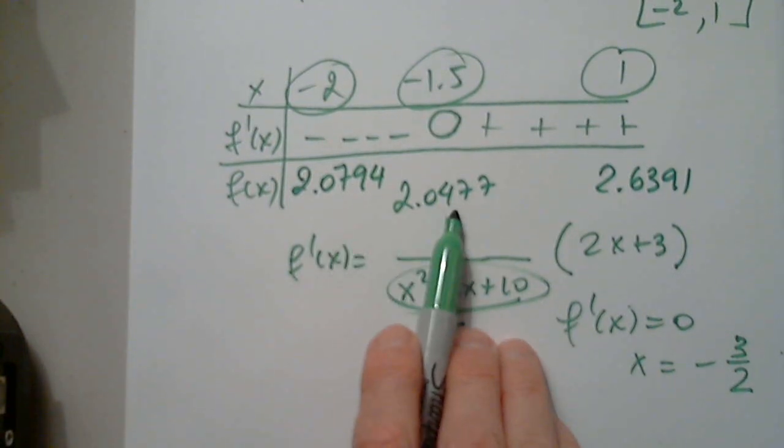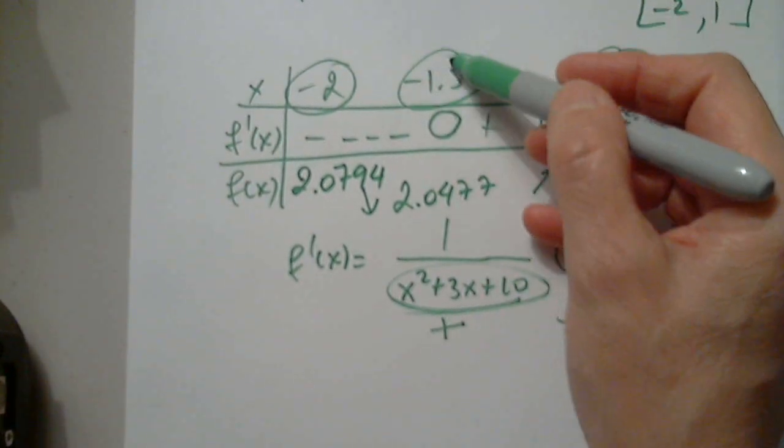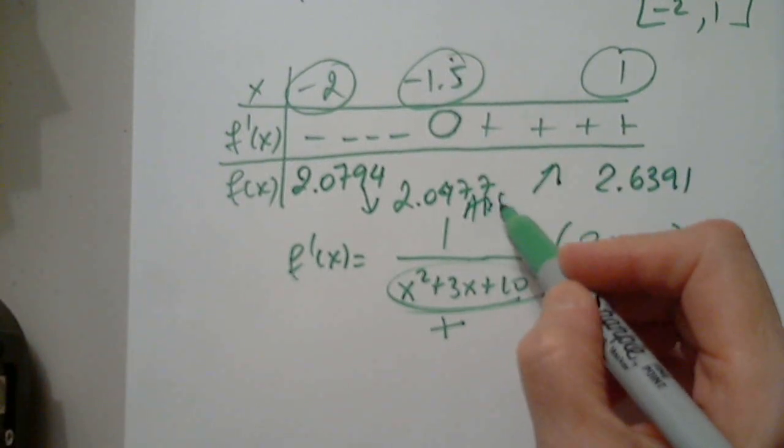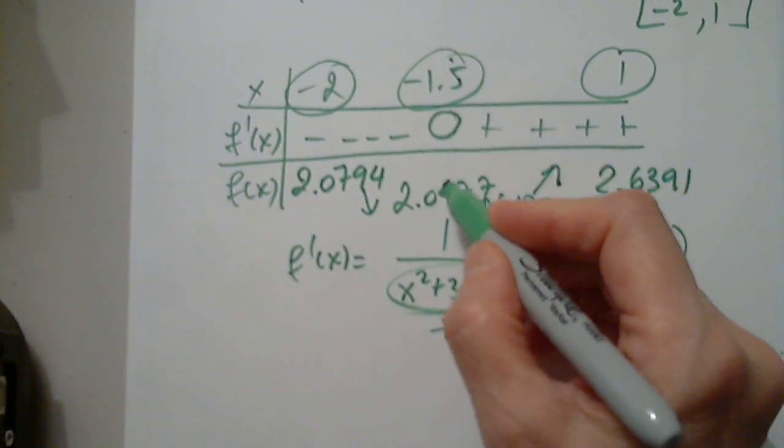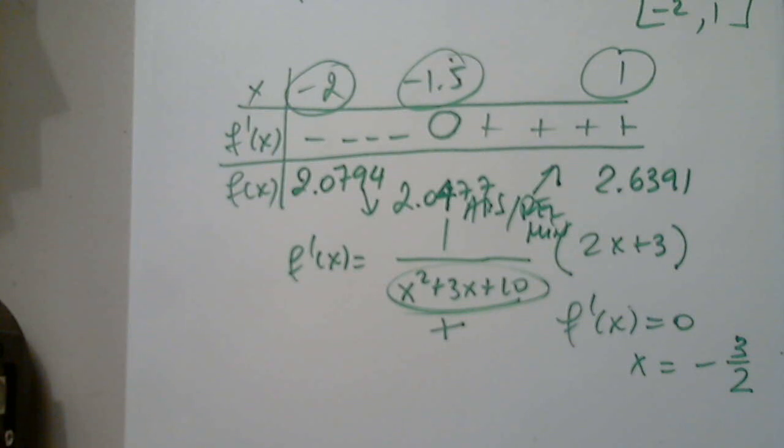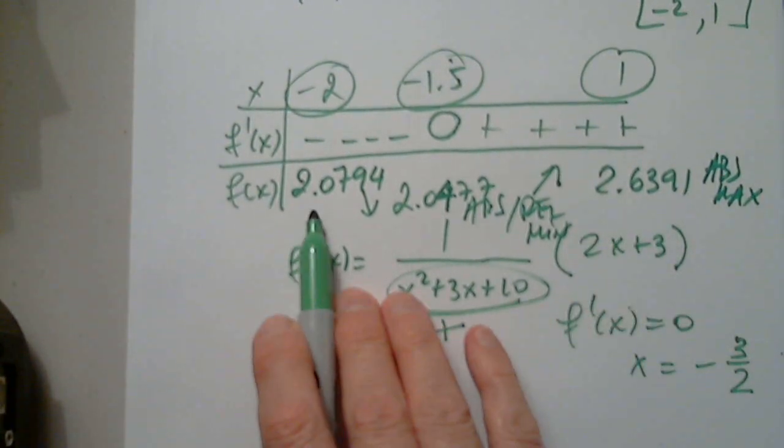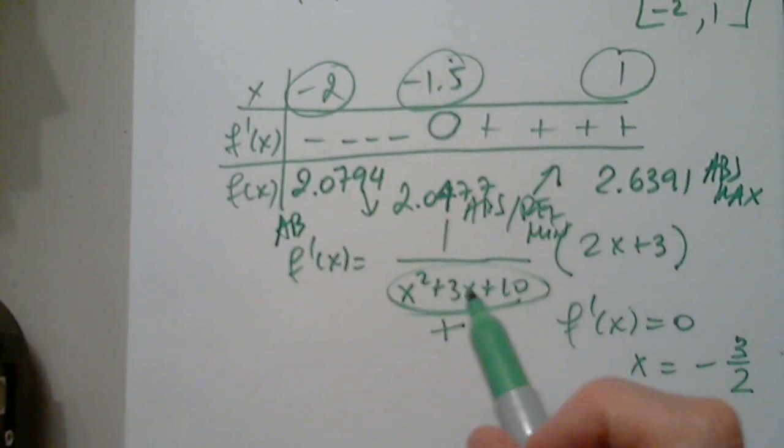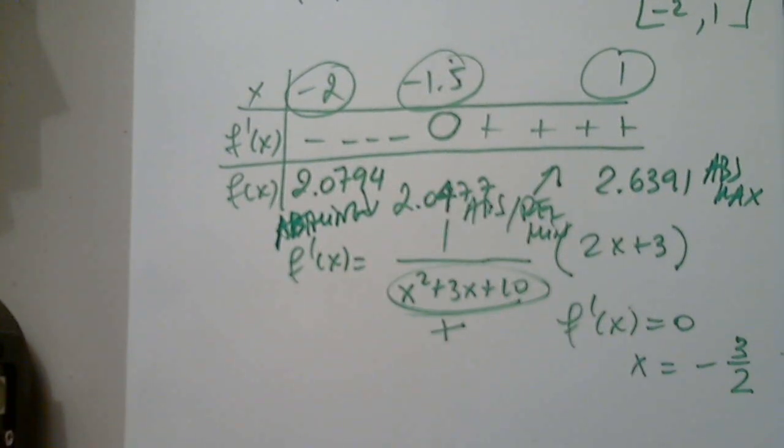Okay, so from 0.7 to 0.4 is decreasing, and to 6.3 is increasing. So this point is the absolute and relative minimum. Is that 4.077 or 9.077? 2.4. Oh, let me look again. 2.0477. So this is the absolute and relative minimum. This is the absolute max, because it's 2.63. And this is the absolute min. Oh, this is nothing. We already found the absolute min.